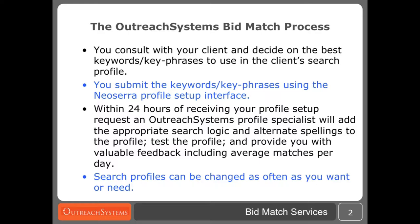Once we've received your keywords, within 24 hours you'll get a confirmation from us. The confirmation will let you know that the profile is online. We will have tested the search profile and will give you a sense of the average number of bid matches the client can receive per day. We'll also give you some suggestions and during this process we will also add in any kind of wildcard, proximity statements, and any kind of Boolean logic necessary to make sure that the client only receives those bids that they're interested in. Our search strategists work together with you to create the best possible profile for your clients and they'll give you recommendations and feedback for every single profile that you create. Once the profile is online your client will start to receive their bid matches, and clients can change their search profiles as often as they want.